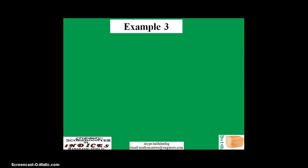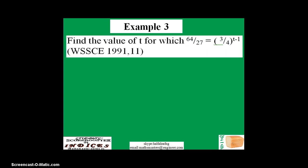Example 3 is a bit more complex and confusing. Find the value of t for which 64 over 27 equals (3/4) raised to power (t - 1). Also a WASSCE question. Let's look at the solution.